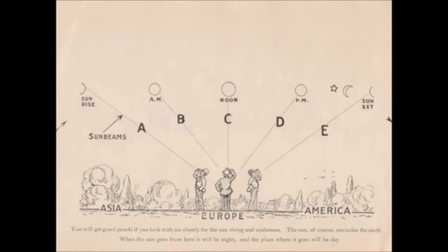C means midday. At that time, the sun is nearest to you. You will see it above your head, and you will feel warmer, and your shadow will be shorter than at any other time. D means in the PM. You will see that your shadow is growing longer, because the sun is moving from over you. E means that the sun is going to a great distance from you. You feel cooler, and your shadow is growing longer, and turning in a circle.